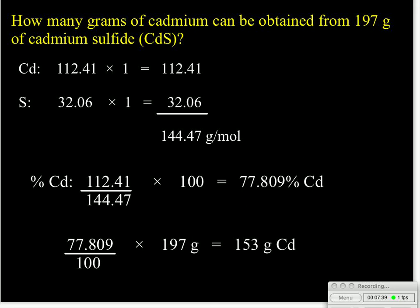And again we look at our answer and say does this make sense? Well we could round some numbers to make our math a little bit easier. And we'd say well it's 77.8. That's a little bit more than 75 percent. 75 percent would be three quarters. And 197 grams of what we're looking at is about 200. And we say well three quarters of 200 is about 150. Okay 153 we're right in the ballpark. Our answer at least checks for being reasonable.